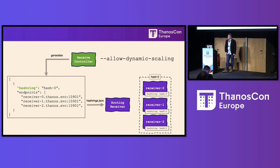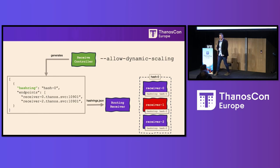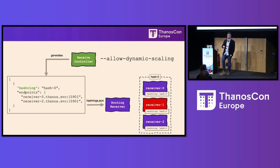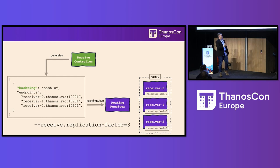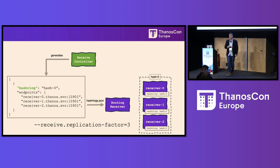We previously ran with dynamic scaling. Usually receives go away one at a time — when you lose a receive with dynamic scaling enabled, it gets dropped from the hash ring, causing receives to redistribute metrics. We found it's more stable if you don't have dynamic scaling and run with a replication factor of three — then you can handle the loss of a receive without samples scattered across all TSDBs. We're lucky we can talk to service teams to discuss scaling needs.